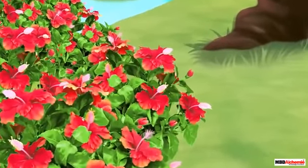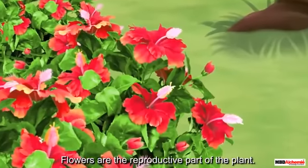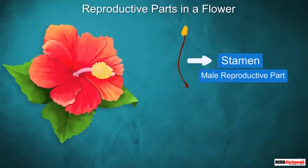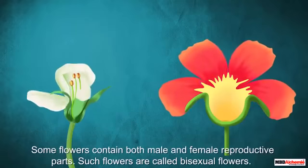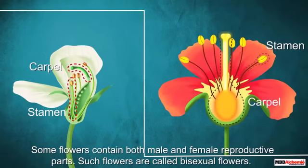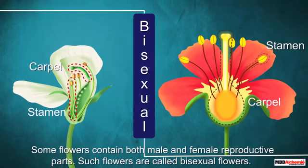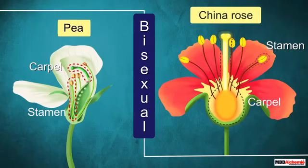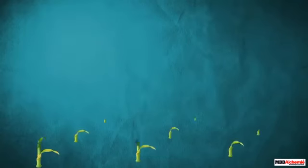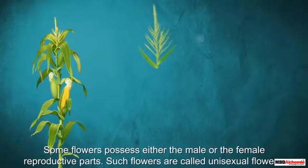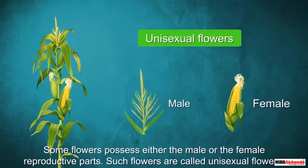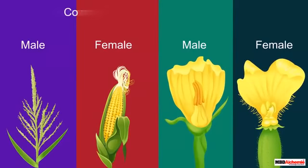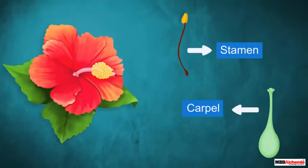Flowers are in fact the reproductive part of the plant. In the flower, stamen is the male reproductive part while carpel is the female reproductive part. Some flowers contain both male and female reproductive parts — such flowers are called bisexual flowers, for example pea and china rose. On the other hand, some flowers possess either the male or the female reproductive parts — such flowers are called unisexual flowers, for example corn and cucumber.